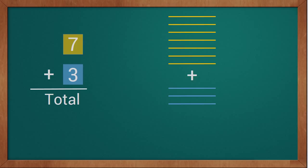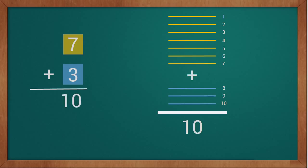Now we will add them together and count all together: 1, 2, 3, 4, 5, 6, 7, 8, 9, 10. This way we have got a total of 10 sticks, so our total is 10. Our answer is 10, so 7 plus 3 equals 10.